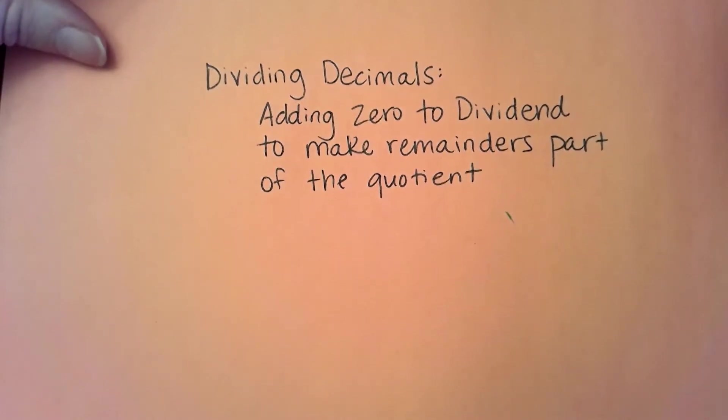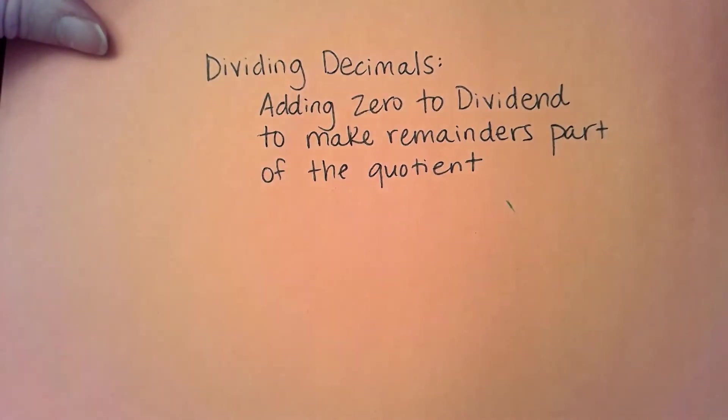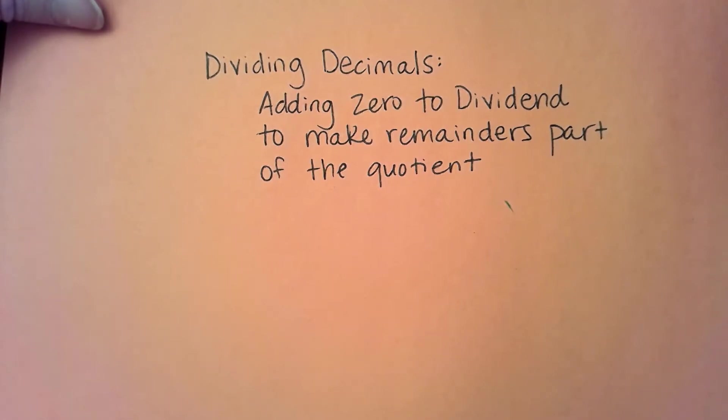Good morning, mathematicians. This is Ms. Lehman. Today, we're going to talk about how we can add zeros to the dividend in order to make remainders actually part of your quotient.